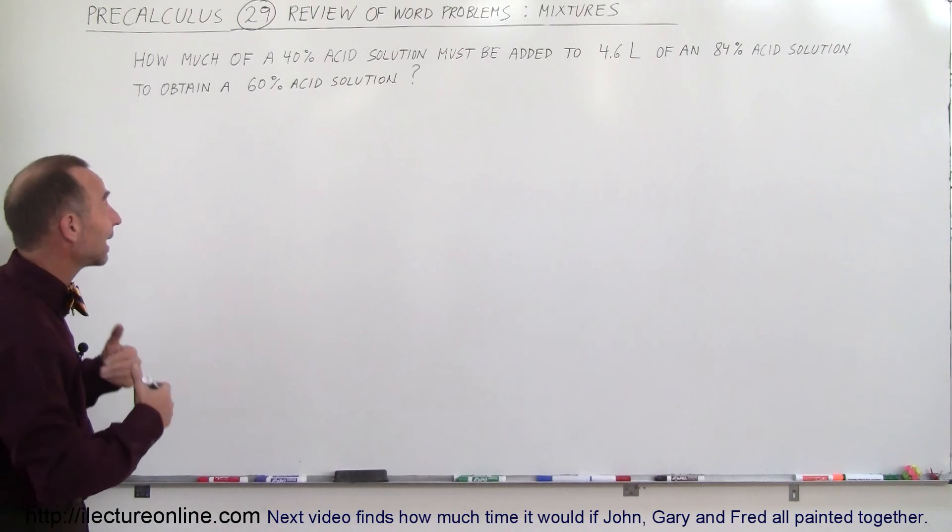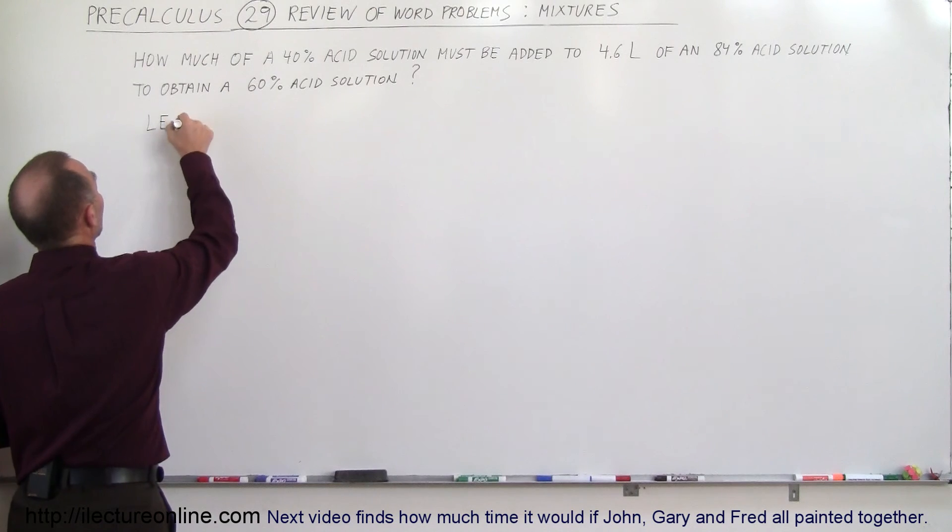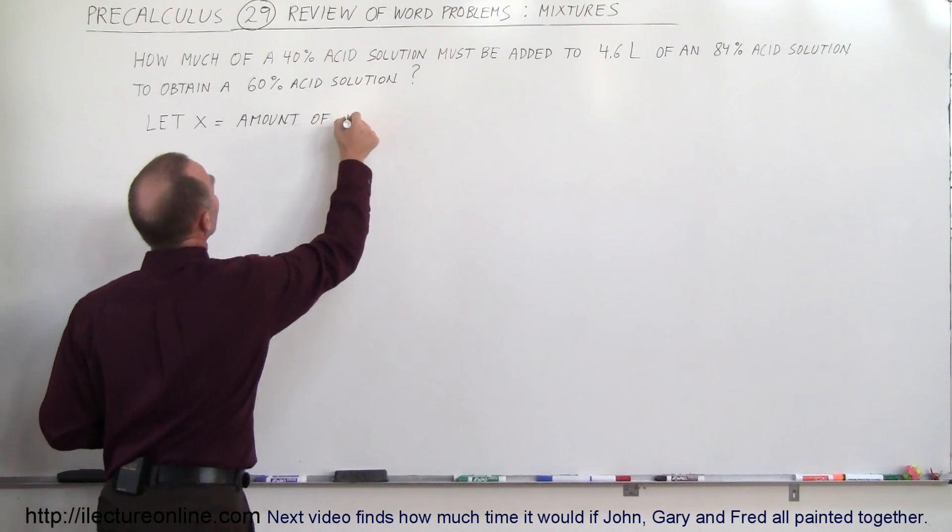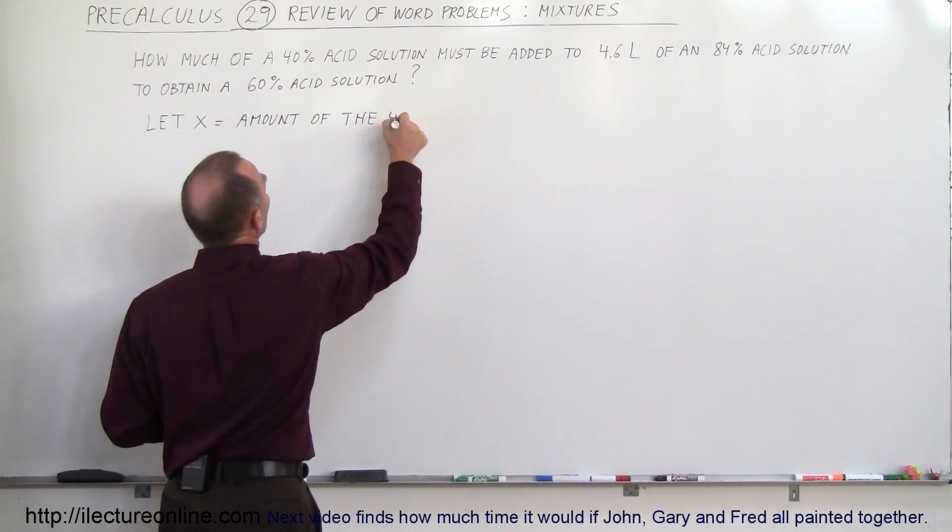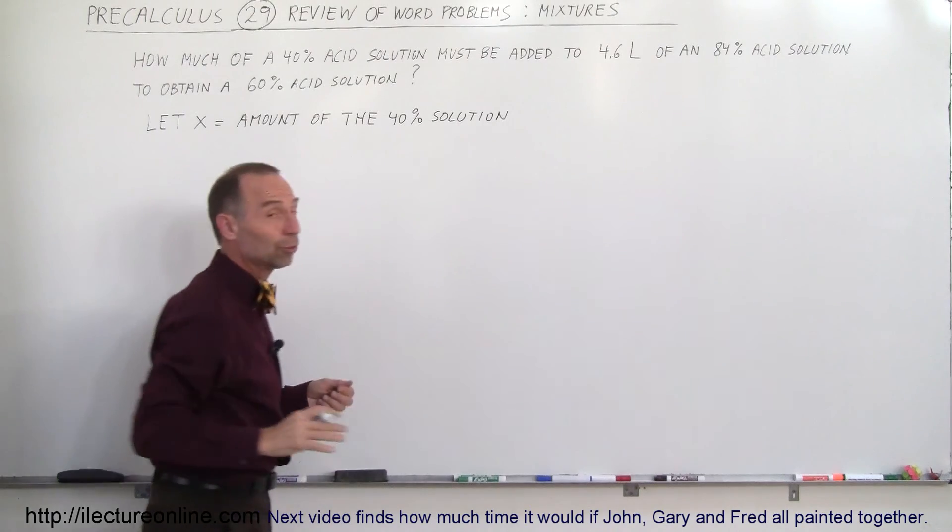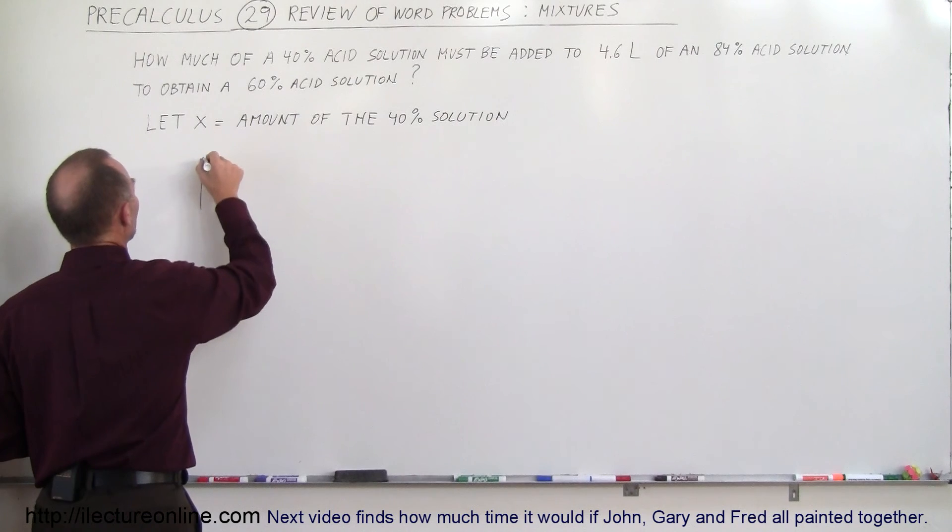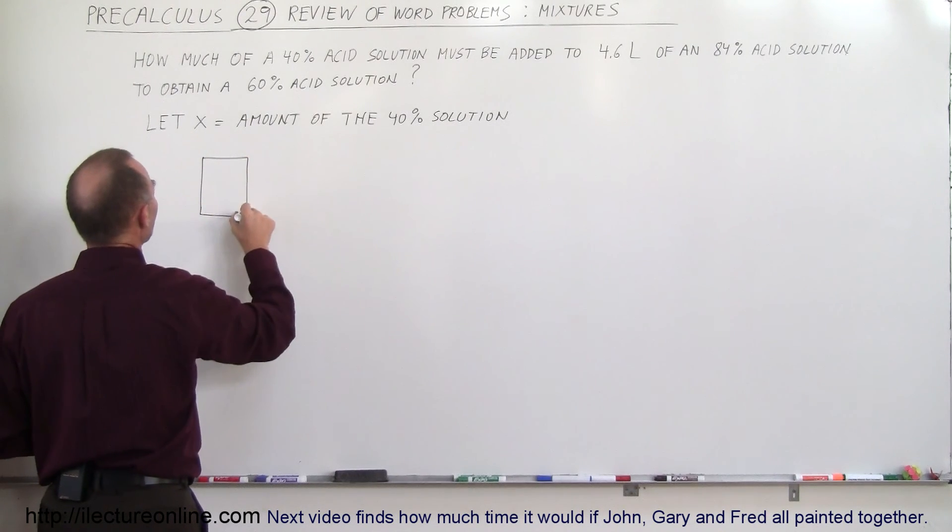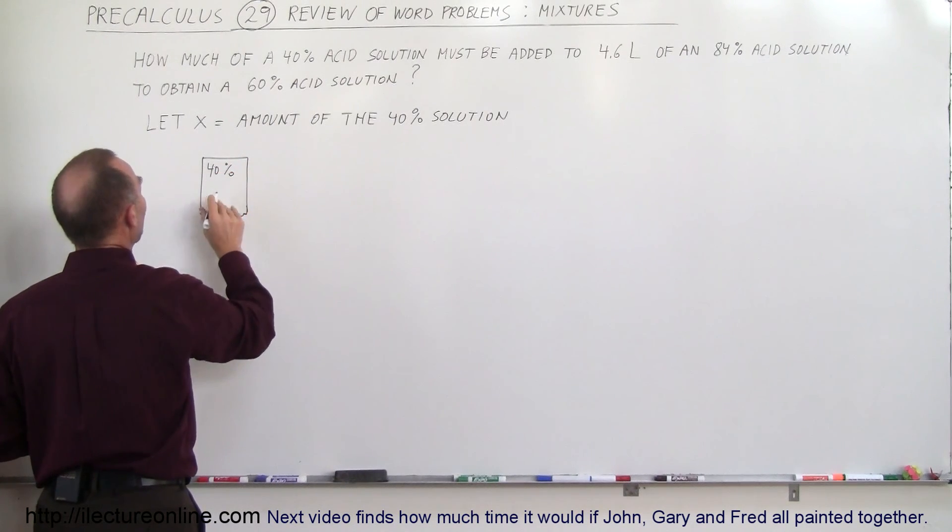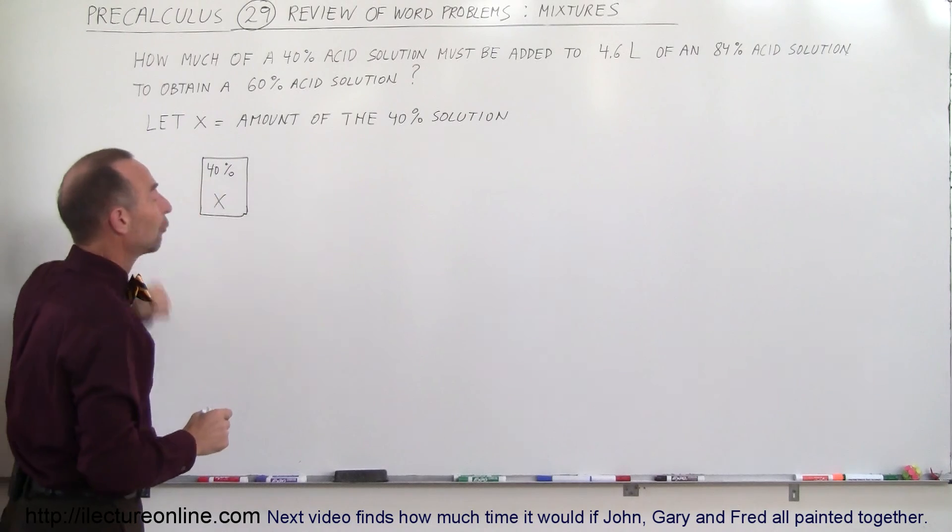We always should start out by saying let X represent something. So in this case let X equal the amount of the 40% solution. That's what we're looking for, so we're looking for X. So now we want to set up something that looks like this. We're going to have a certain amount of the 40% solution, so we have 40% and the amount that we have there is X. We have X quantity or X liters of a 40% solution.